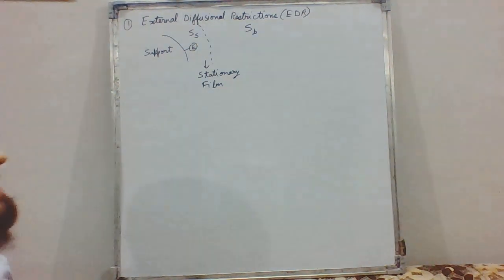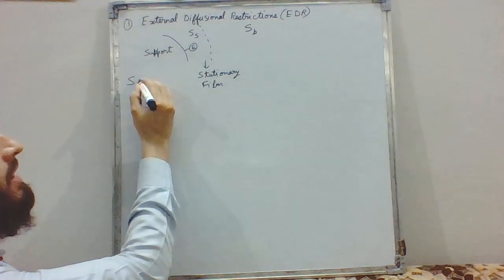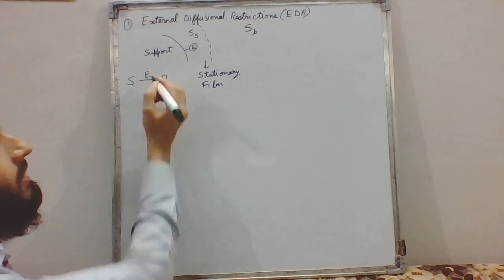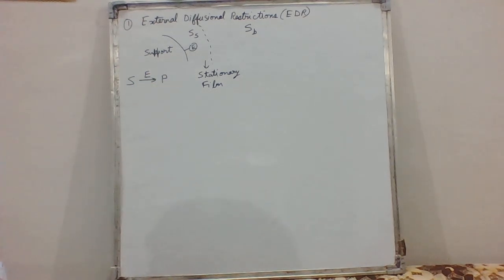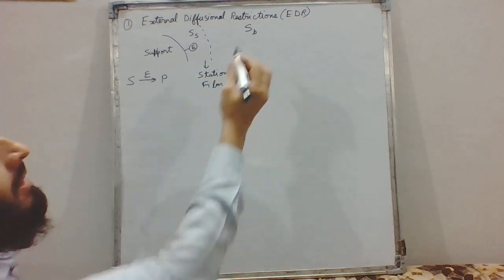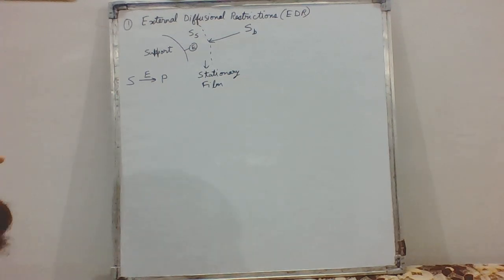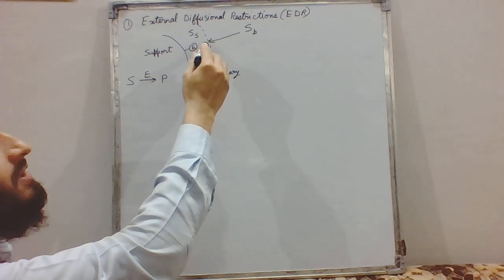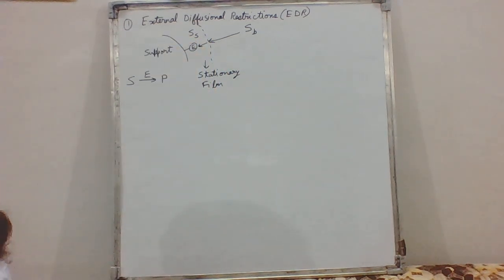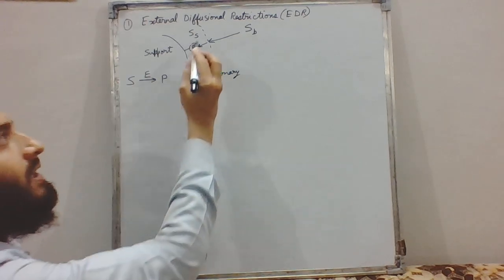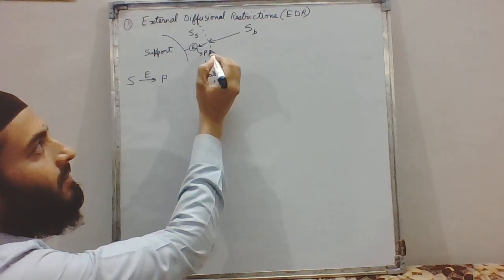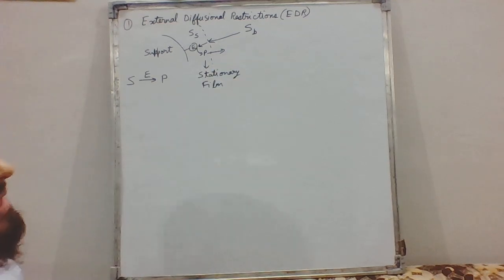Assuming a simple enzymatic reaction, our substrate will get converted into product in the presence of enzyme. At steady state, the substrate is getting transferred from the bulk to the film, entering the thin film, and from the boundary of this thin film it reaches the point of activity — that is, the active site of the enzyme. Then the product is released, which travels back to the bulk medium.